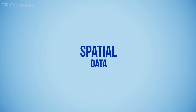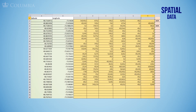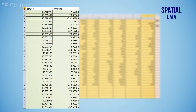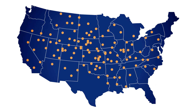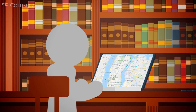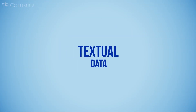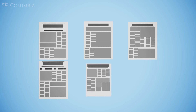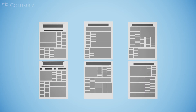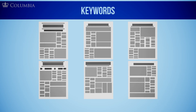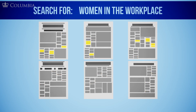Number two: spatial data, sometimes called geodata, is information that explicitly encodes location coordinates for the data, which then often gets represented on a map. A researcher might compile geographic data about all known bicycle accidents in New York City from a particular year, and then place that data on a map. Number three: textual data is made up of text-based documents that have been organized or encoded to allow for text analysis methods. A researcher might identify and evaluate groups of related keywords and phrases within a set of texts to glean insights that might not be apparent — for example, by analyzing all New York Times articles over several decades to see how language related to women in the workplace has changed over time.